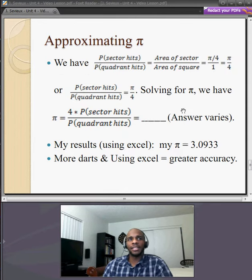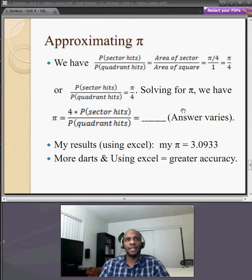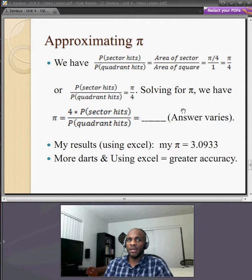Okay, we have the probability of sector hits over the probability of quadrant hits is equal to the area of the sector over the area of the quadrant, which equals pi over 4 over 1, which is equal to pi over 4.